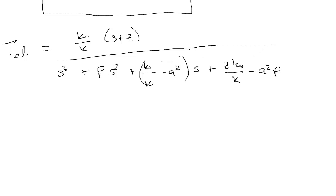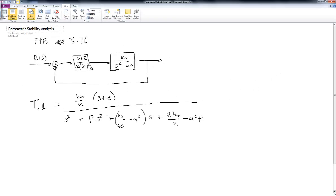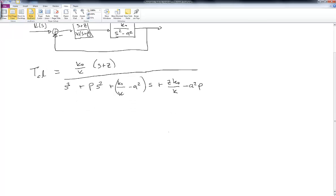And the question is, what restrictions are there on P, K-naught, K, A, and Z so that the system is stable?